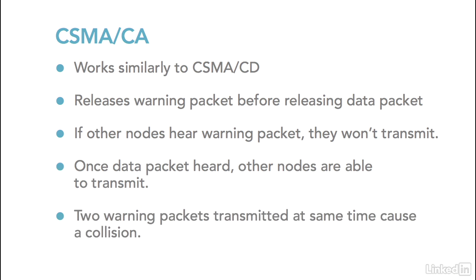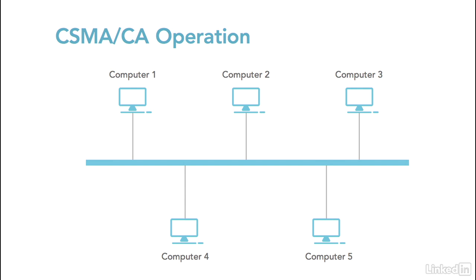However, if two warning packets are transmitted at the same time — just like in the previous example where two data packets collide — it will result in a collision, and that collision is handled exactly the same way as with CSMA/CD. This diagram illustrates how CSMA/CA works: computer 1 wants to send a packet to computer 3 and releases a warning on the network. All computers hear the warning and refrain from transmitting their own. Once the warning passes, computer 1 releases its data packet, and as each node hears it go by, they attempt to release their own warning packet to compete for the next transmission.